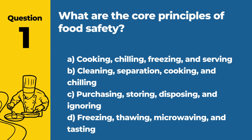Question 1. What are the core principles of food safety? Answer: B. Cleaning, separation, cooking, and chilling. These four principles are fundamental to preventing foodborne illness by reducing the risk of contamination and ensuring food is cooked and stored at safe temperatures.